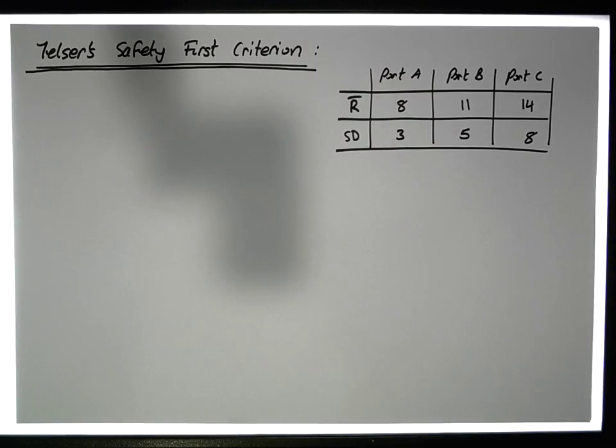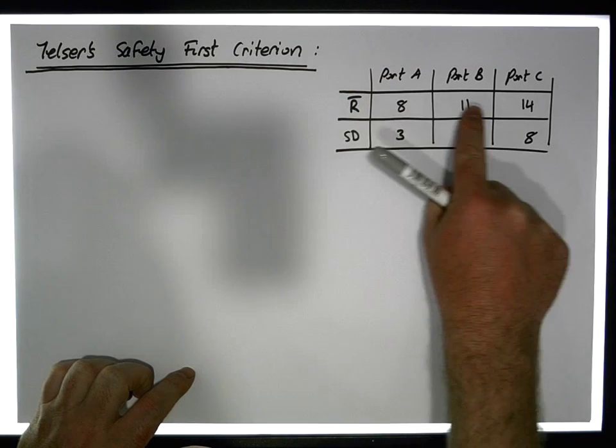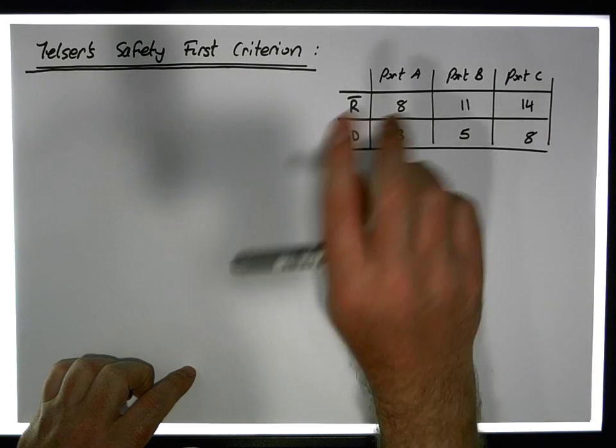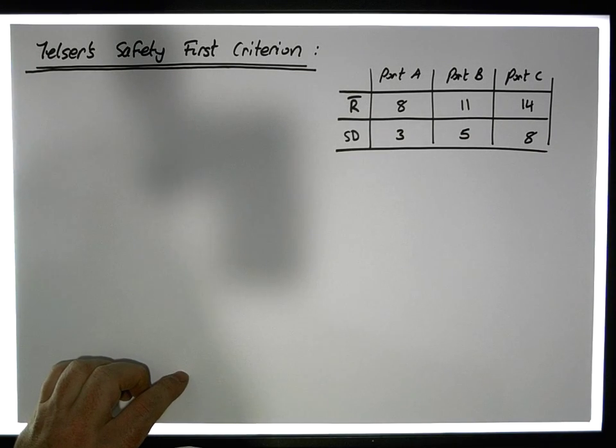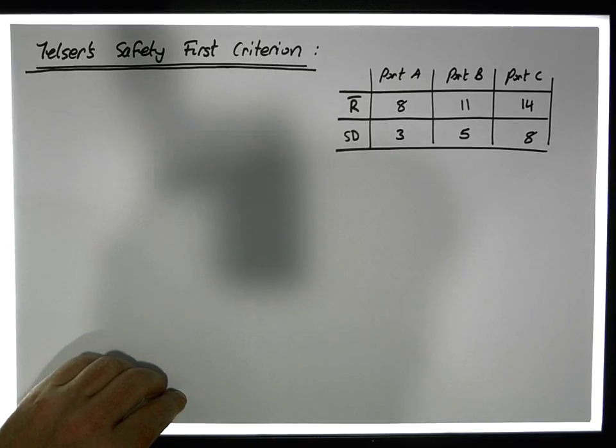It's an extension of Roy's Criterion and Kataoka's Criterion in the sense that it involves quoting a particular acceptable minimum return level and also a risk level. With these two, we find the expected return for a portfolio and then choose a portfolio that will achieve at least that particular return level. From a definition perspective, Telser's Safety First Criterion asks us to choose the portfolio that has the highest return once it meets two safety first conditions or criterion.